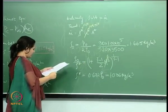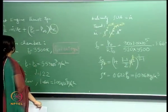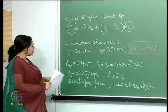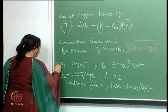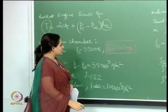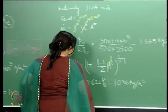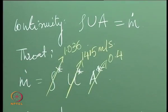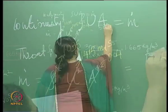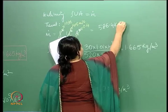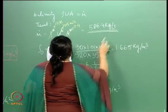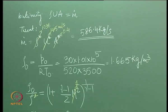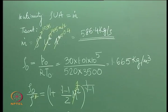We still need A-star, which is the area at the throat — and that is actually given to us as 0.4 m². Using the continuity equation m-dot = rho* × U* × A*, we get m-dot equal to approximately 586.4 kg per second. So we have a mass flow rate of 586.4 kg/s.